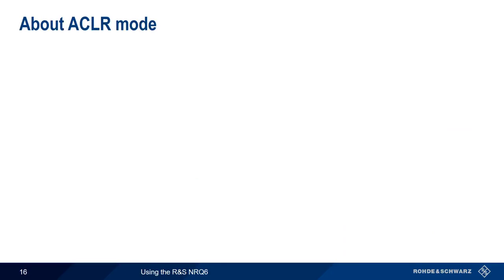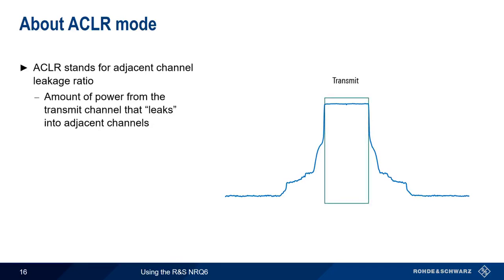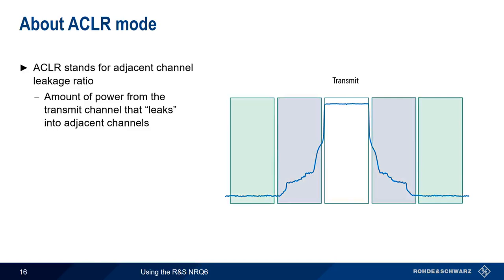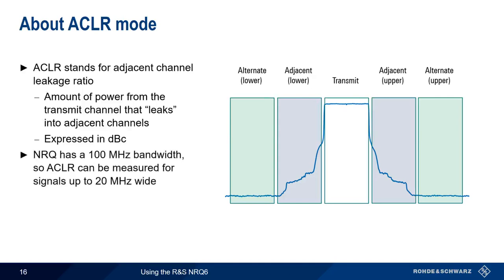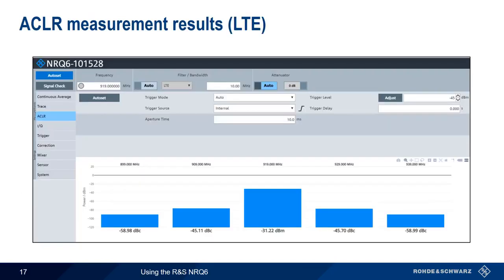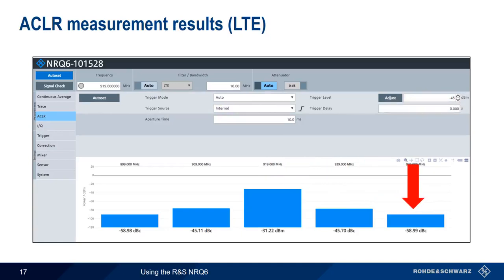The last measurement mode we'll look at is ACLR, or Adjacent Channel Leakage Ratio. This is a common measurement for communication systems. ACLR measures the ratio of the transmit channel signal power that leaks into the channels above and below it. These channels are often referred to as the adjacent and alternate channels. ACLR is normally expressed in dBc, or the amount of power relative to the transmit carrier power. Since the NRQ-6 is 100 MHz bandwidth, it can measure ACLR for signals up to 20 MHz wide — that is, 5 channels total — and predefined filters are provided for both 3GPP and LTE. Here is an example of an ACLR measurement made on a 10 MHz LTE signal. The transmit channel has a power of minus 31.22 dBm, and the adjacent and alternate upper channel powers are minus 45.7 dBc and minus 58.99 dBc.